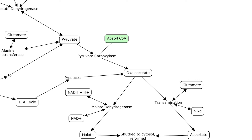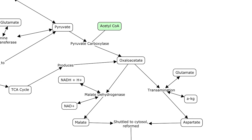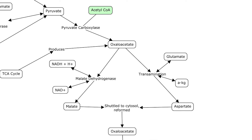Remember we saw that last time in the TCA cycle. Also, pyruvate is going to be converted to oxaloacetate by the enzyme pyruvate carboxylase. This is stimulated by the presence of acetyl-CoA. As you remember, after glycolysis, pyruvate — if there's oxygen present — can basically become one of two things: either acetyl-CoA via the pyruvate dehydrogenase complex, or through pyruvate carboxylase it can become oxaloacetate. So now we've got oxaloacetate, and if you remember from the TCA cycle as well as the electron shuttles, oxaloacetate can't cross the mitochondrial membrane.